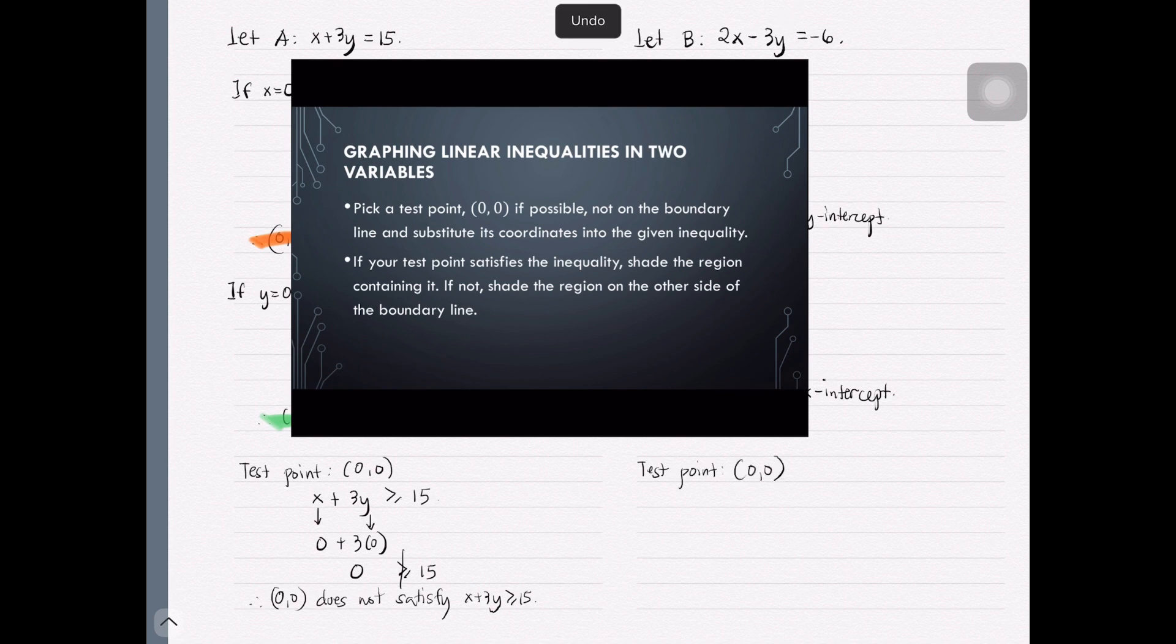Similarly, for our second inequality, we'll have this. And still, 0 is not less than or equal to negative 6. And so, (0, 0) does not still satisfy the inequality here.